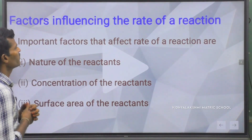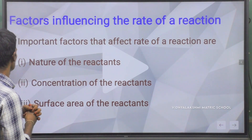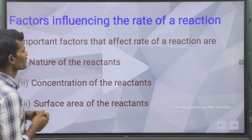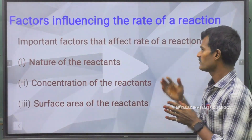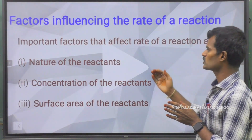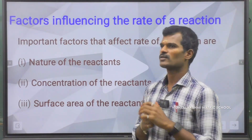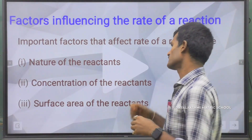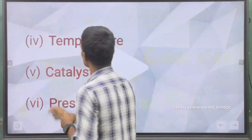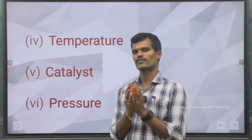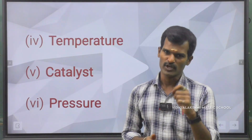Factors affecting the rate of reaction: the first one is nature of the reactant, second one is concentration of the reactant, third one is surface area of the reactant, fourth one is temperature, fifth one is catalyst, and finally sixth one is pressure.